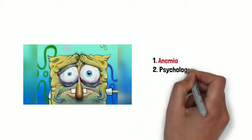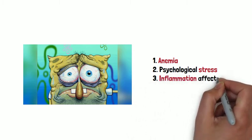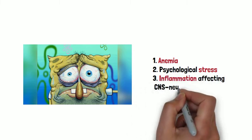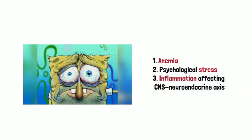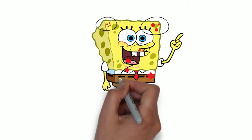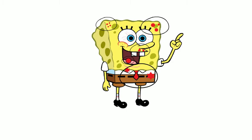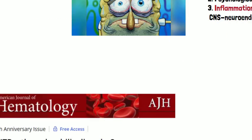Fatigue may be due to concomitant anemia, psychological stress, or peripheral inflammation-induced neuroendocrine dysfunction. Counter-intuitively, patients with ITP have a two-fold increased risk of deep vein thrombosis. Lymphadenopathy and splenomegaly are typically absent, and their presence should prompt investigation for other etiologies of thrombocytopenia.